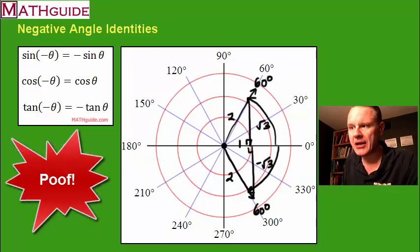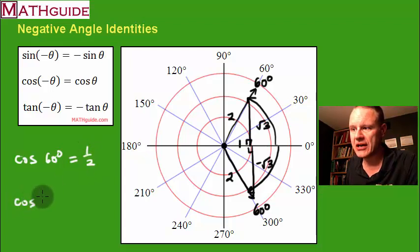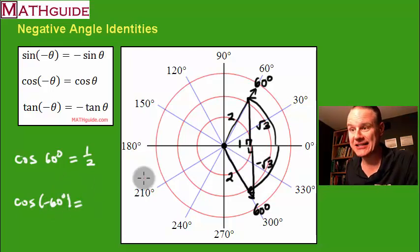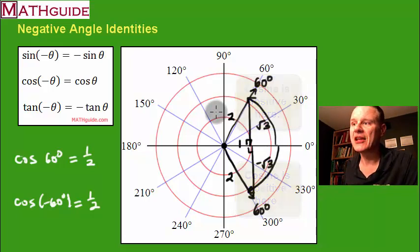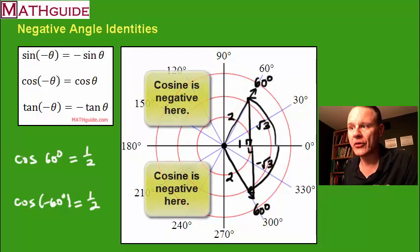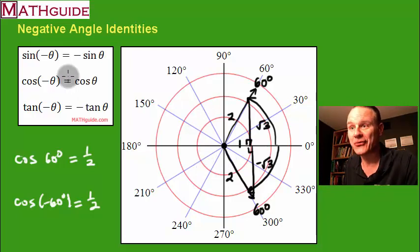Now let's talk about cosine — it's a whole different matter. If you take the cosine of 60 degrees, it's adjacent over hypotenuse. If you take the cosine of negative 60 degrees, the adjacent side is still positive. They're equal. When you compare quadrant one to quadrant four, they're both positive for cosine. When you compare quadrant two with quadrant three angles, they're both negative for cosine. So they're always going to be equal when looking at their mirror images in a vertical fashion — that's why this relationship works.